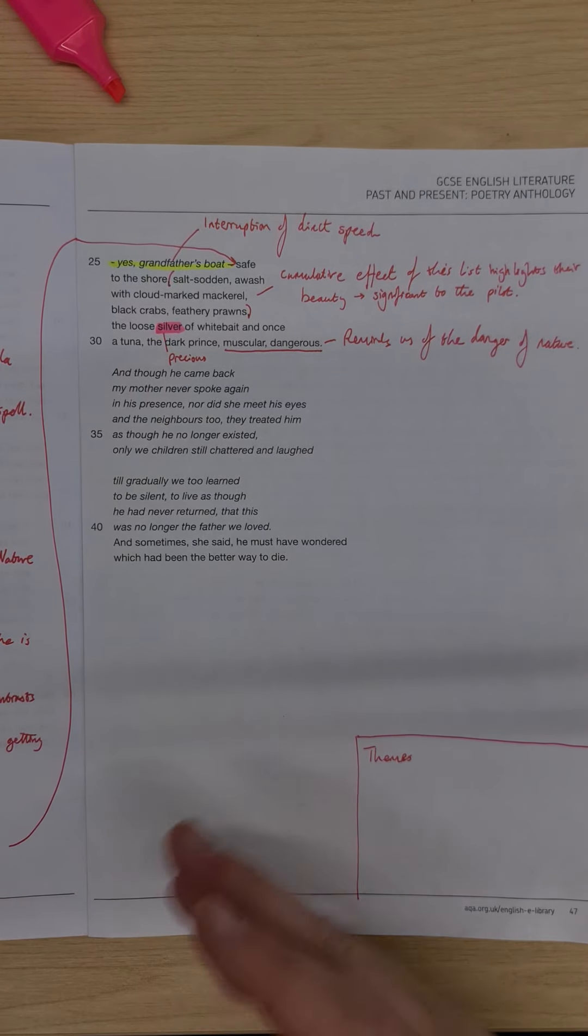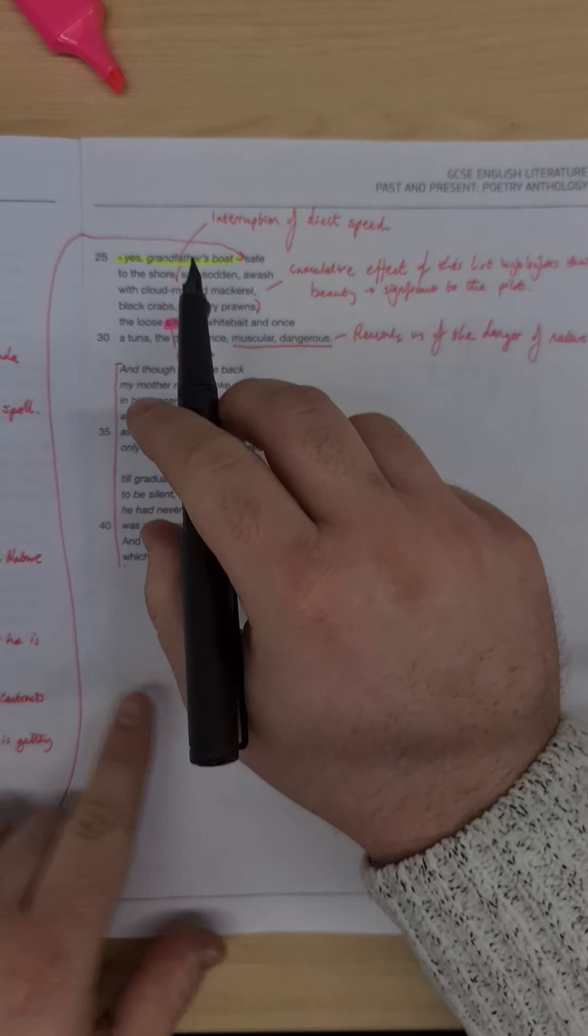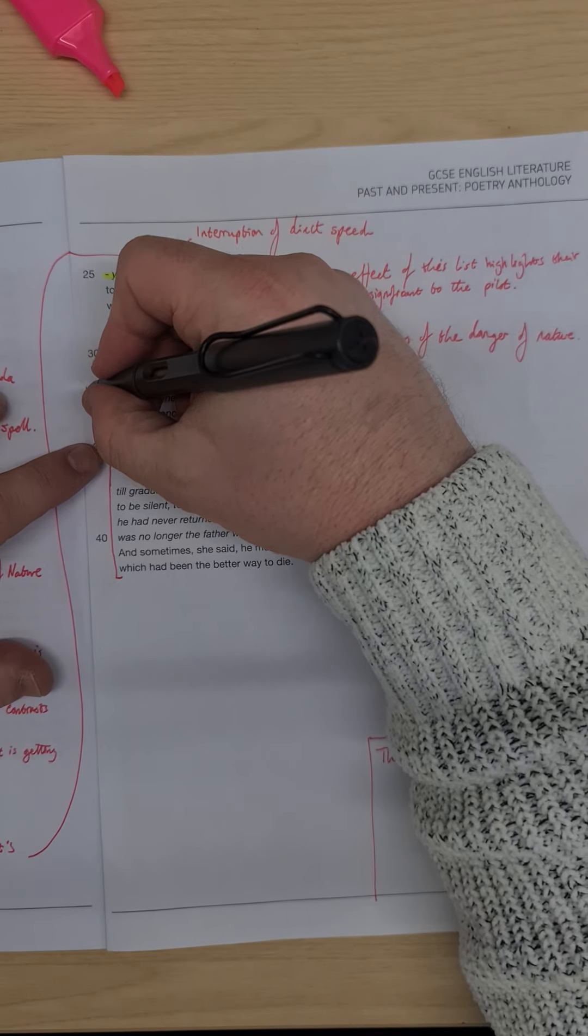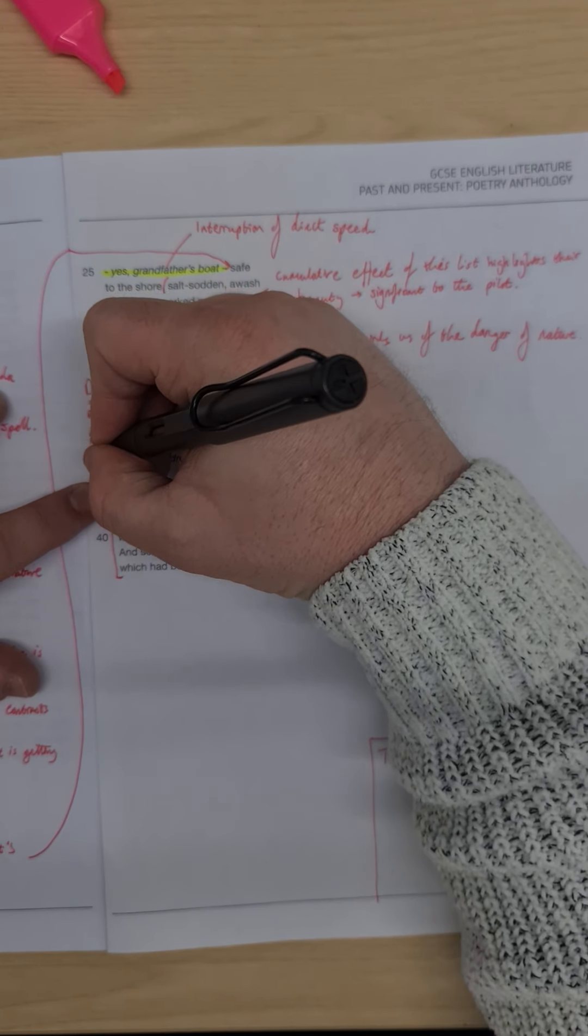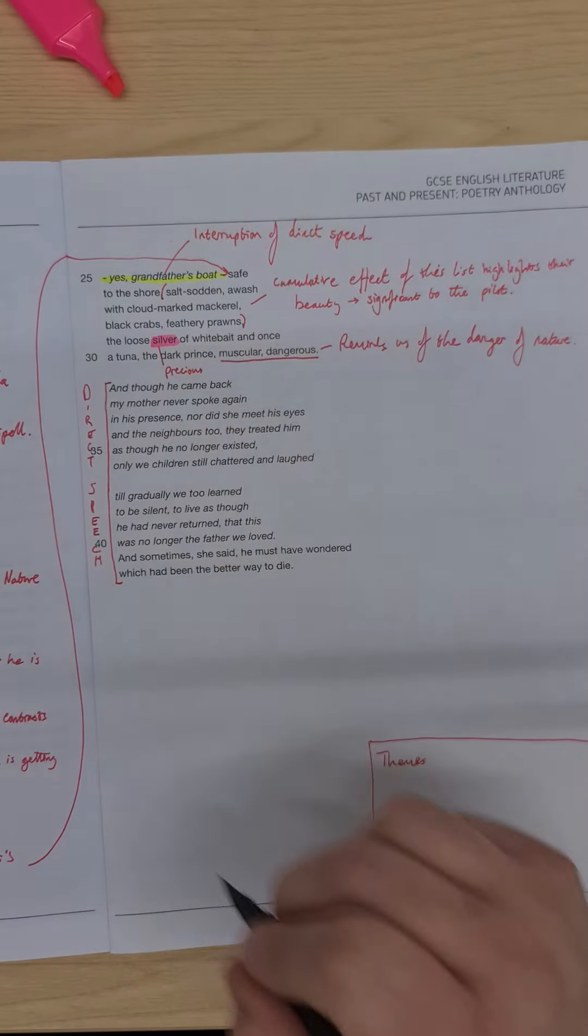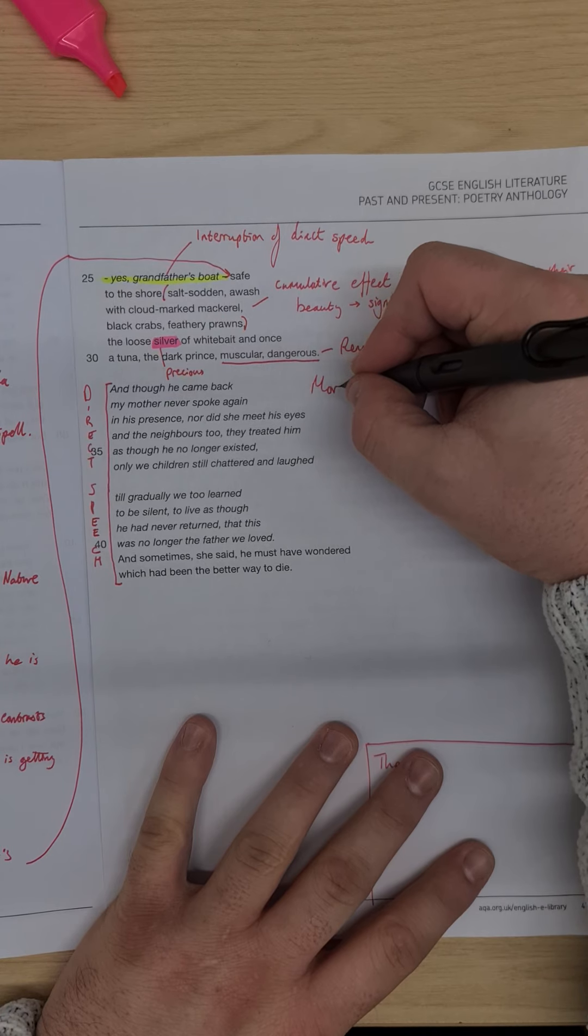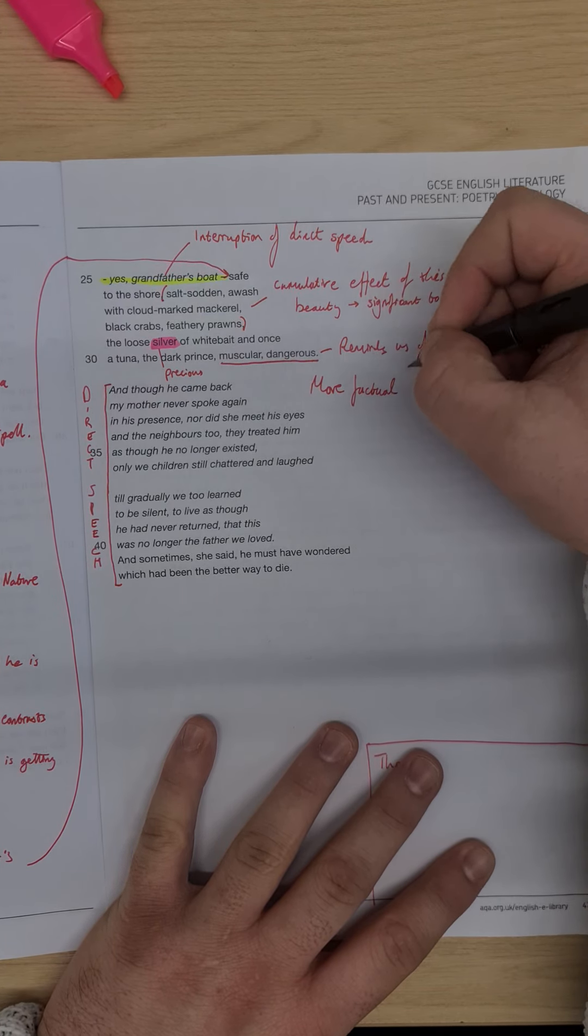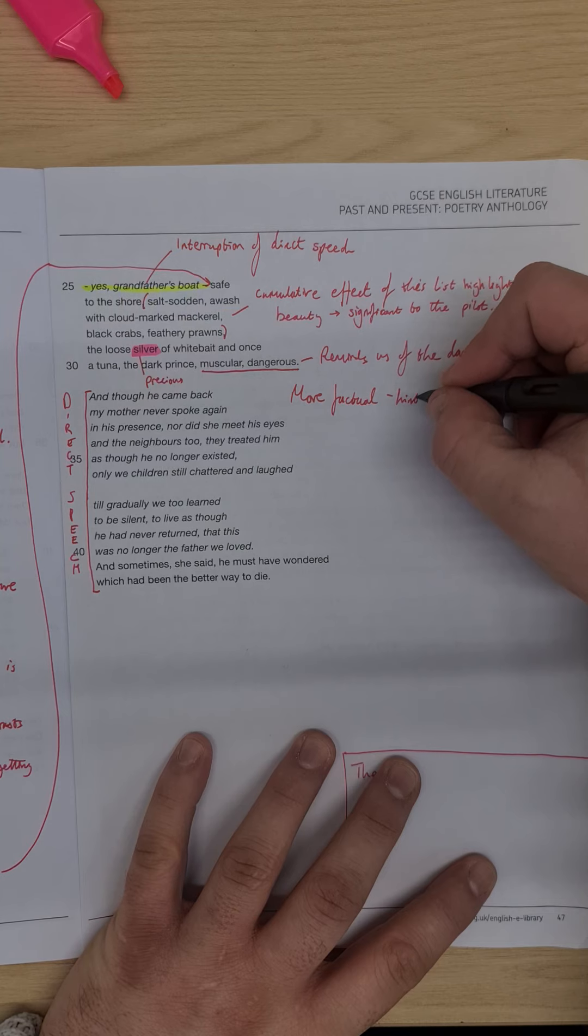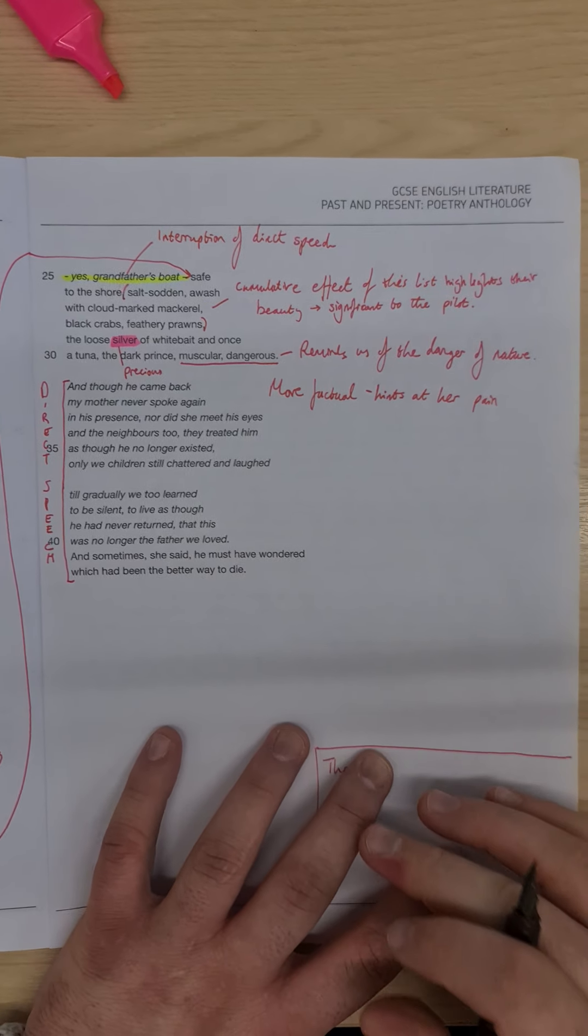The last two stanzas are totally different. In fact these two stanzas here are totally separate and as we've had a couple of times already throughout the poem, this is now direct speech. It's more factual, which hints at her pain because she can't face describing it in depth.